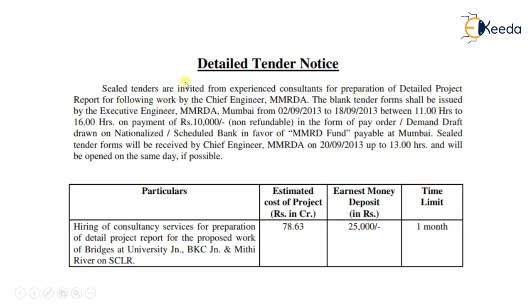The tender is invited by the chief engineer or executive engineer — for example MMRDA — and generally, executive engineer or chief engineer will invite this. You can change the body to PWD, WRD, or any other department. The blank tender forms shall be issued by the executive engineer of MMRDA, and you can change MMRDA to PWD or any other department as needed.